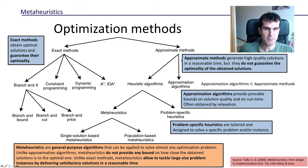Within these approximate methods, we've got two classes. One is heuristic algorithms, and the other one is approximation algorithms. Notice that approximate methods and approximation algorithms are two different classes. Approximation algorithms is a subclass of approximate methods.